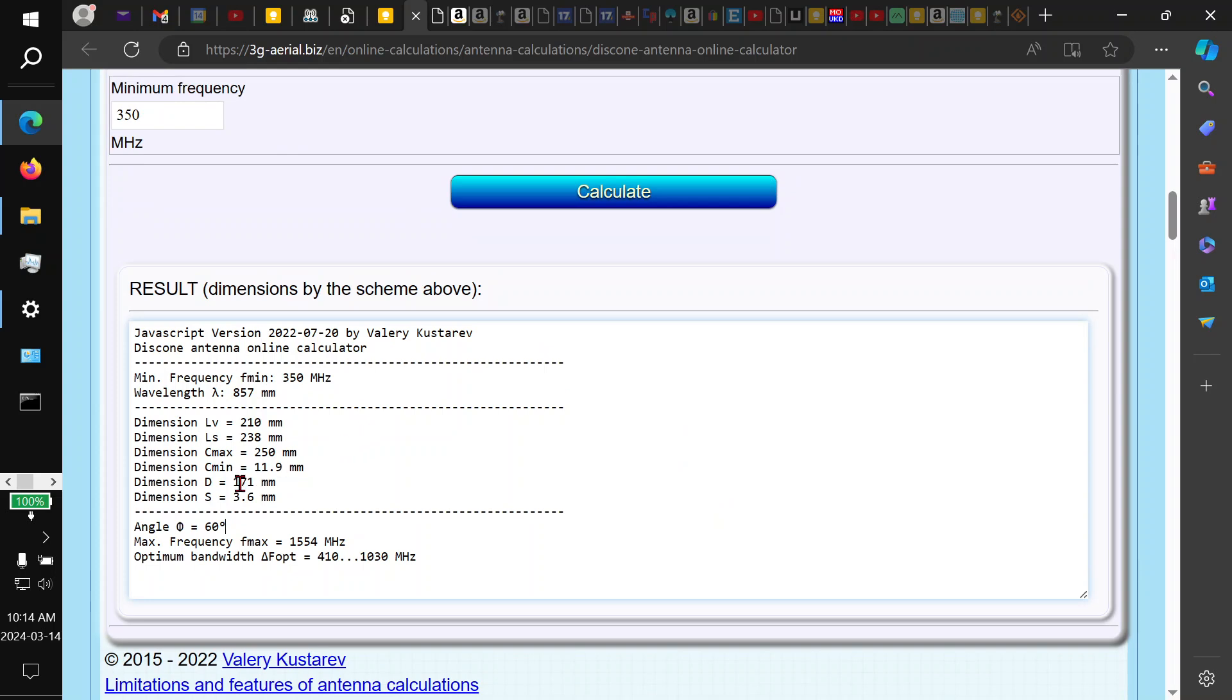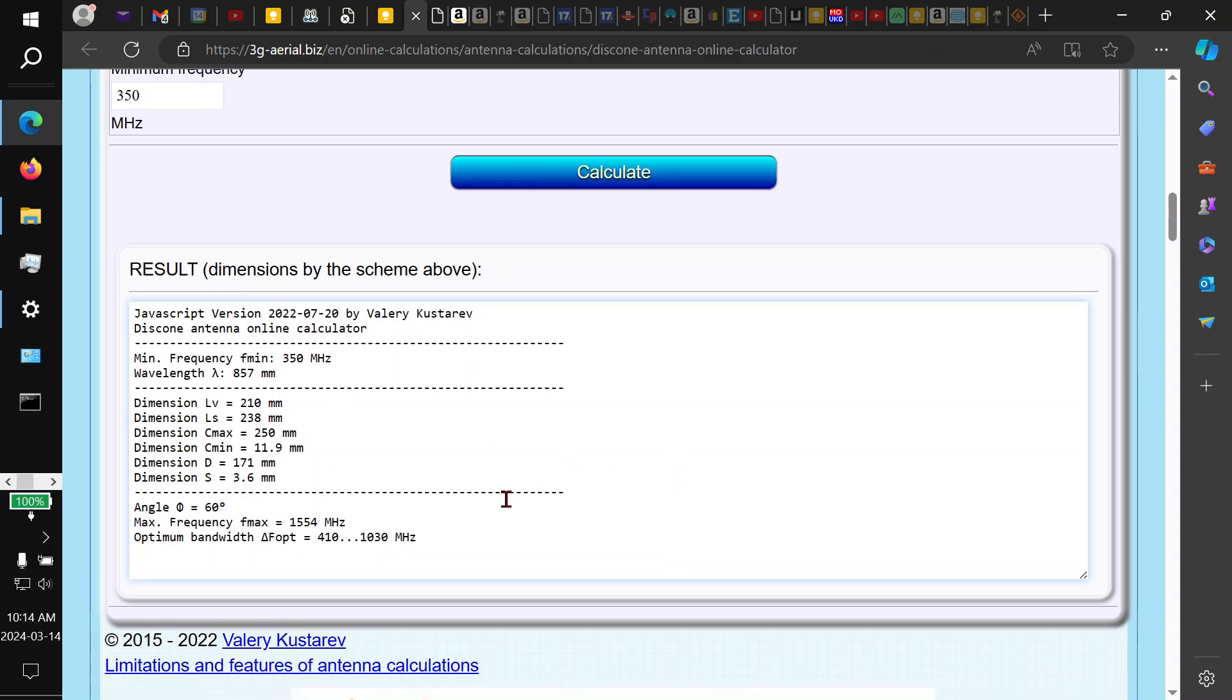Putting in 350 MHz as the minimum frequency gives these results. The important one is the diameter of the disc on top, 171 millimeters, and the length of the radials is 238 millimeters. The optimum bandwidth for this antenna theoretically should be 410 to 1030 MHz, so it'll cover 70cm and the mesh-tastic frequency and a bit higher. I could have gone a bit lower, but the higher the frequency, the shorter the elements and the less material you need.